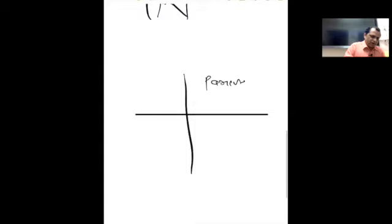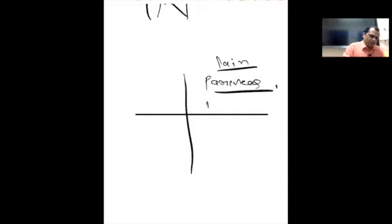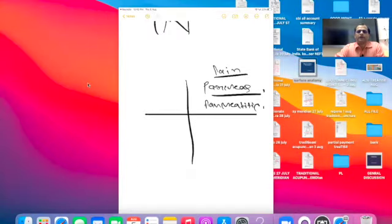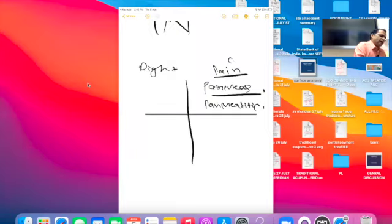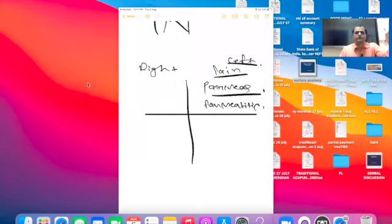If one patient is suffering with a problem in the pancreas — pancreatitis — and has pain in the abdomen, how do we write it? The pancreas is located on the left side. So we write: pain in the left upper quadrant. The patient is suffering with pancreatitis; when you examine and find pain in the left upper quadrant, the diagnosis is clinically confirmed. Kindly correlate clinically.